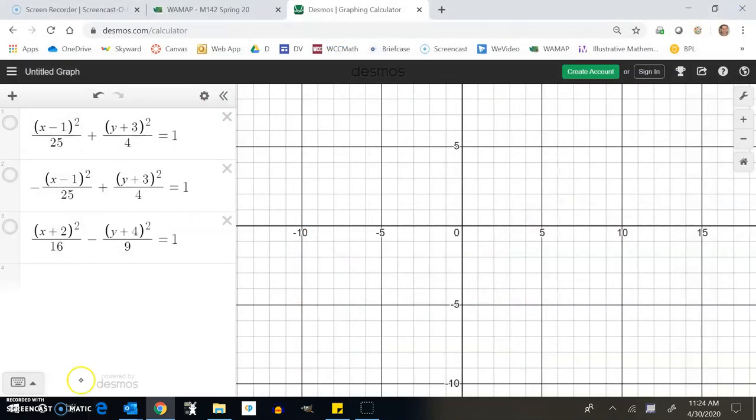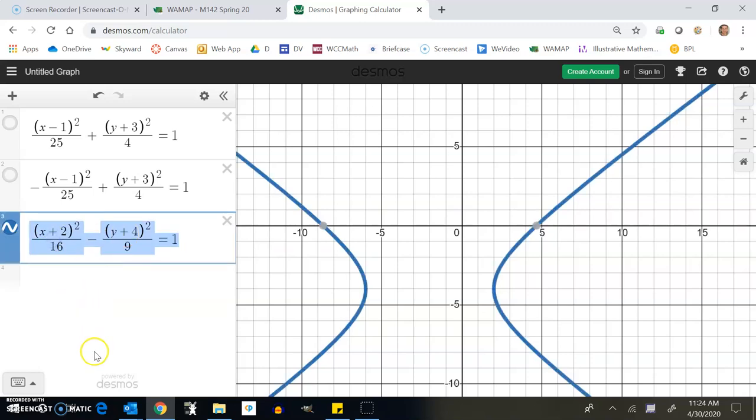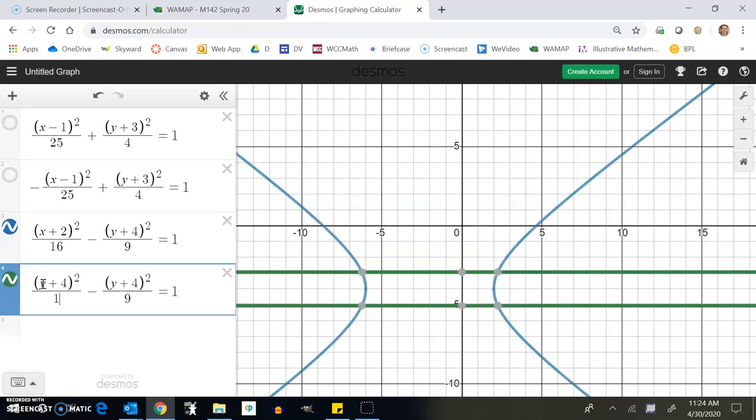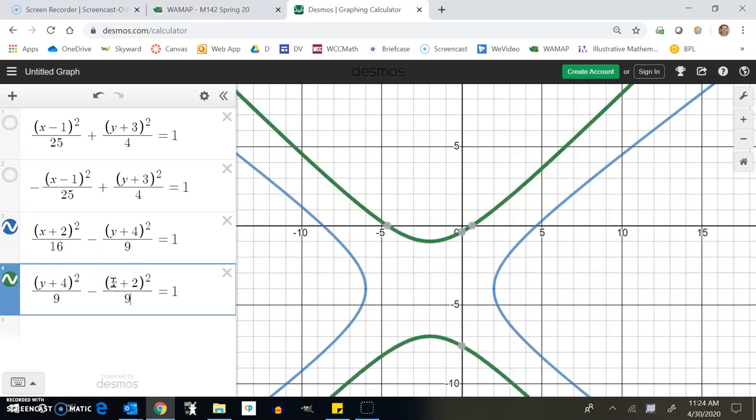One thing I want to add is, there's my graph like that, what if instead of this, it had been... I'm going to change it to plus 4 over 9. I'm just going to switch them. So instead of subtracting the y term, it's going to subtract the x term.